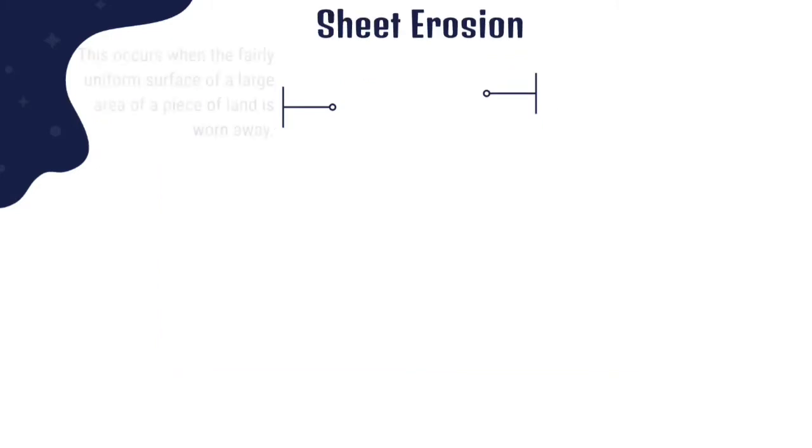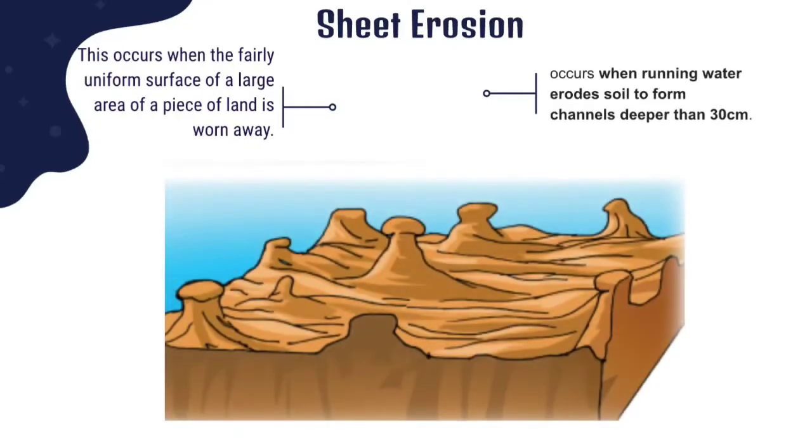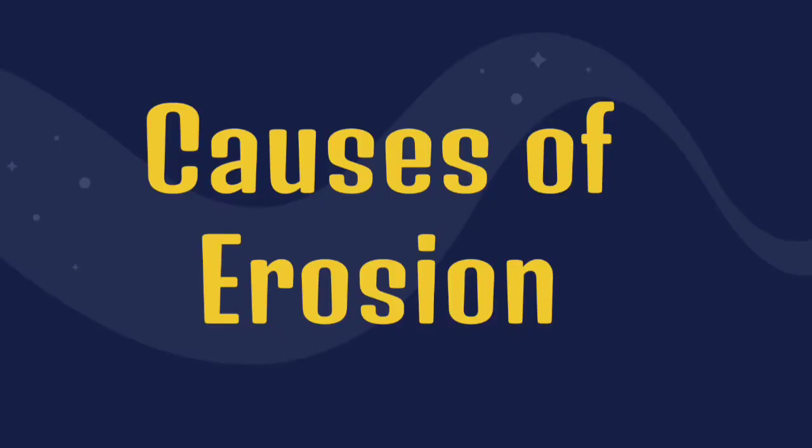Now let's talk about sheet erosion. Sheet erosion occurs when the fairly uniform surface of a large surface area of land starts wearing out. Look at this picture. When the rain keeps falling, some parts of it is no longer flat. Some part is going down due to rain, wind, and other troubles happening.